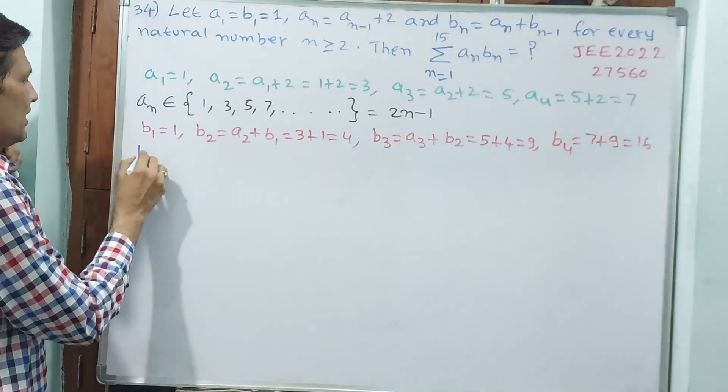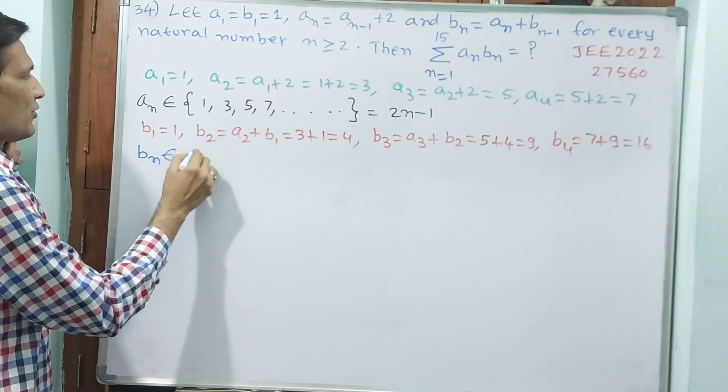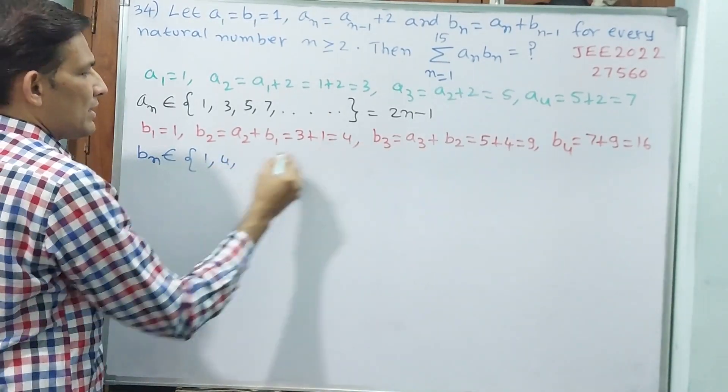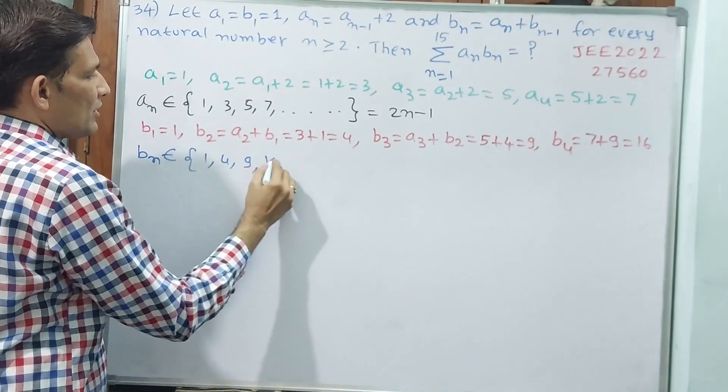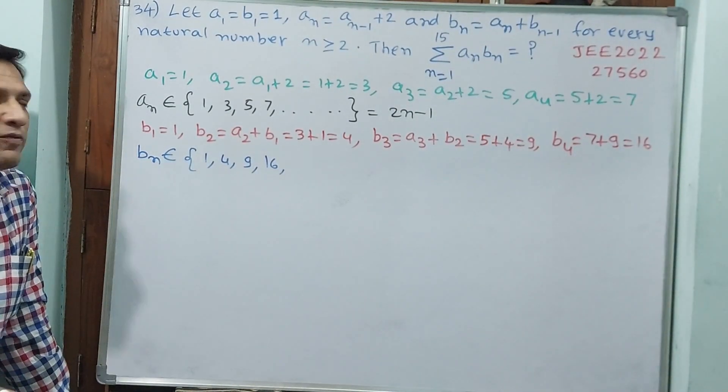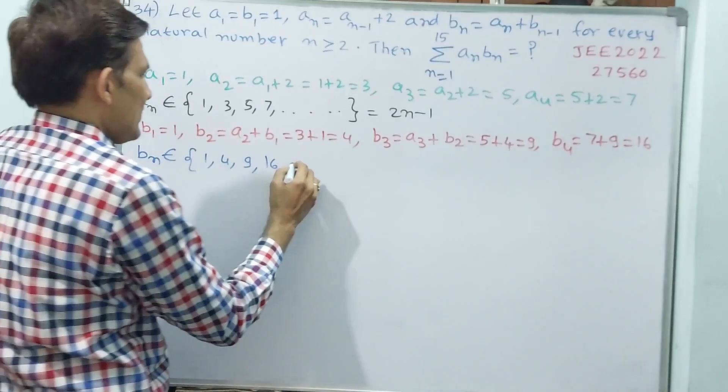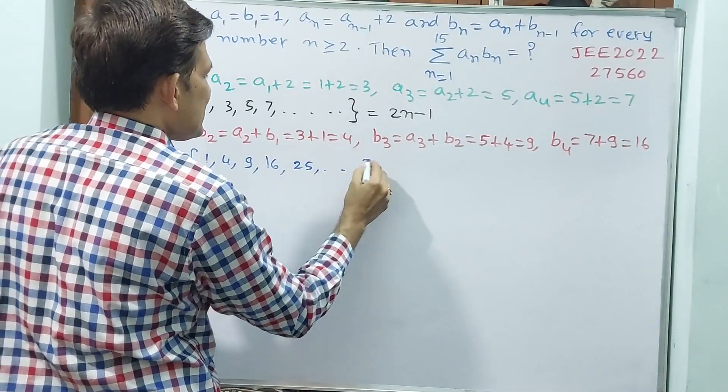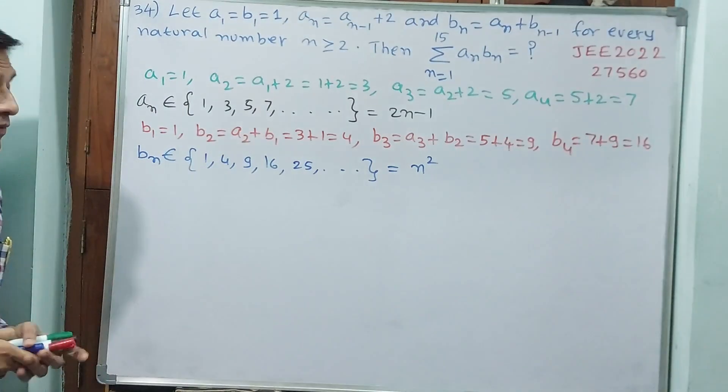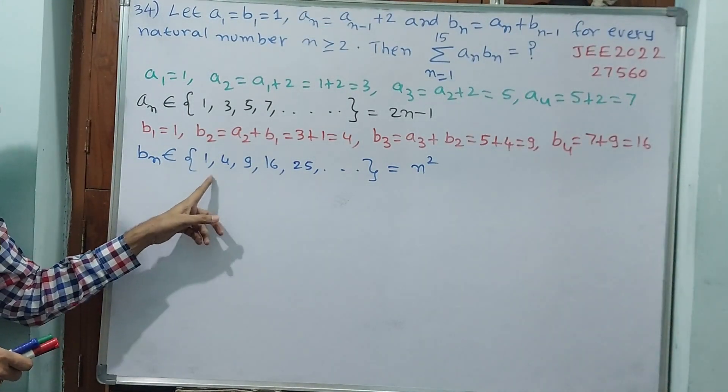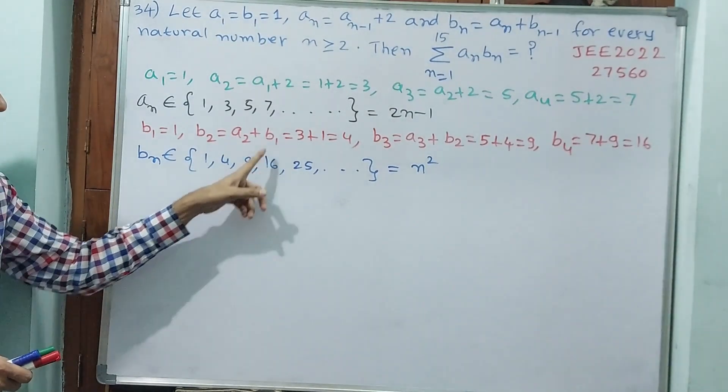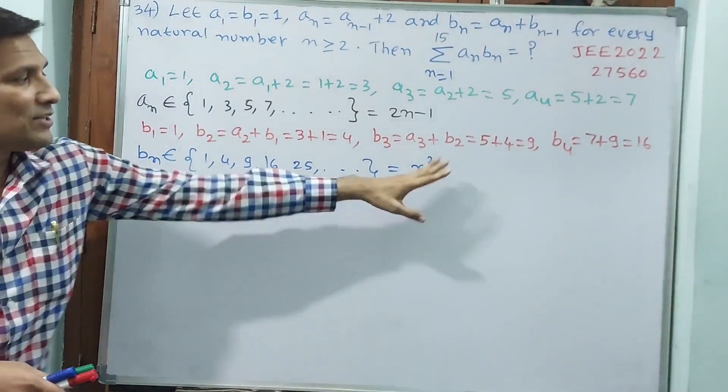Enough, now we will write. See, b_n belongs to set. You see, 1 comma, 4 comma, 9 comma, 16 comma, 25. These are squares, which implies n square. If at all n is 1, 1 square. If at all n is 2, 2 square. Third term, 3 square. Fourth term, 4 square. Fifth term, 5 square. Like that it is going on.